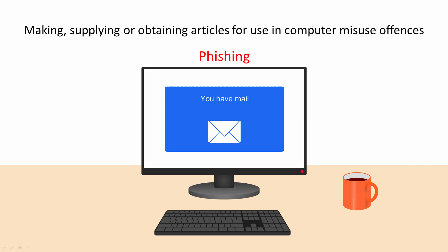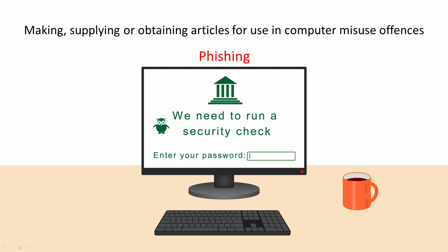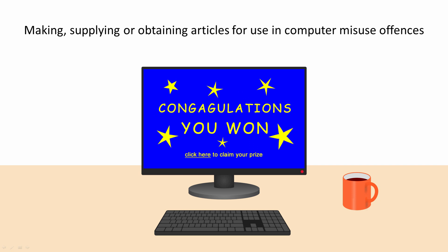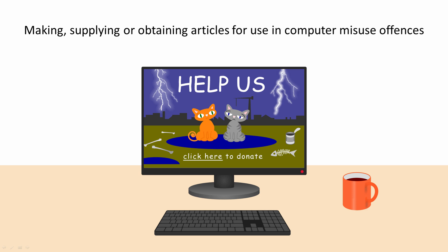Phishing, which starts with PH instead of an F, is one of the most insidious and fastest growing types of computer crime. Victims are sent a message via email, text, social media, or even a voice call, which in turn directs them to a bogus website. That website might then convince them to hand over money or sensitive information such as their bank details or online shopping passwords. It might even install malware on their computer. Phishing is a form of social engineering, so called because it takes advantage of the way people behave, exploiting their fears, greed, sympathy, or just their curiosity. Sometimes it's carefully targeted at only one or two individuals — so-called spear phishing.